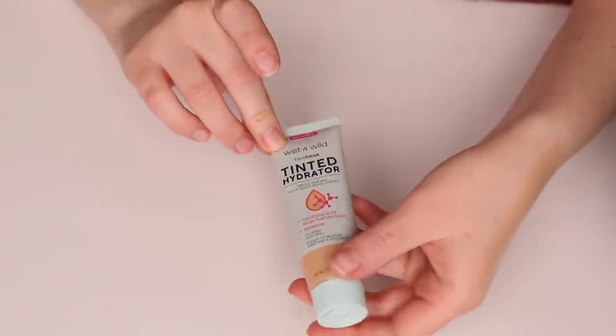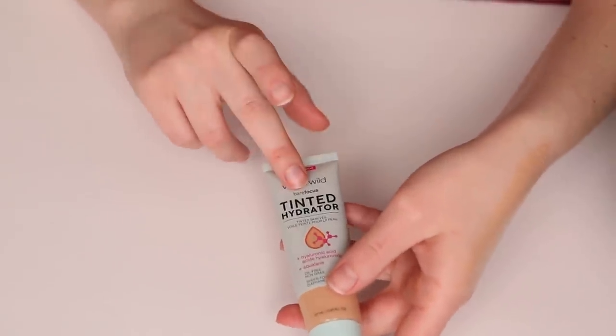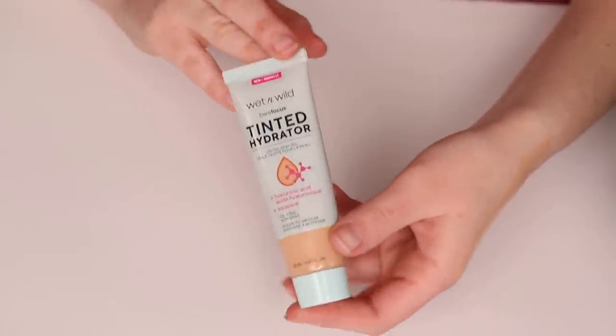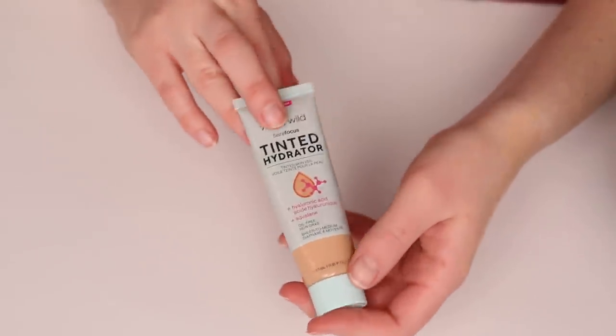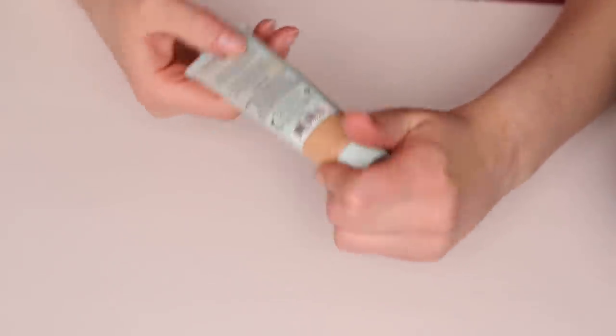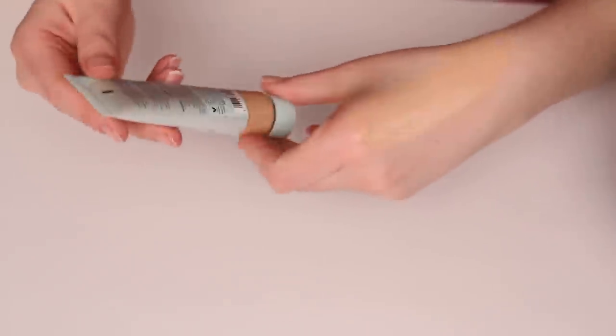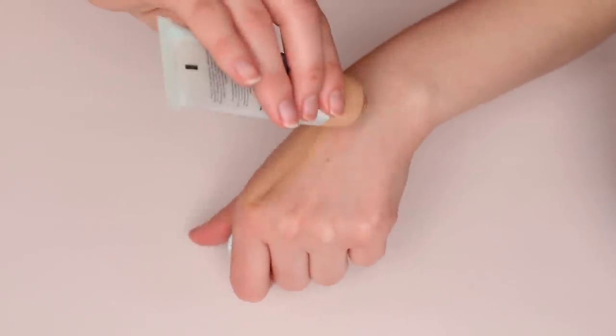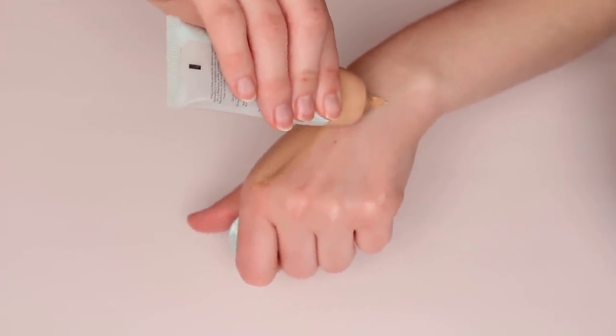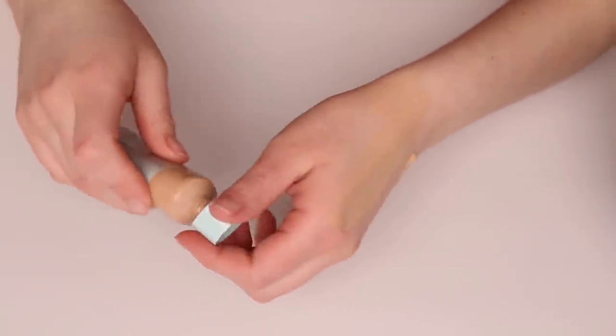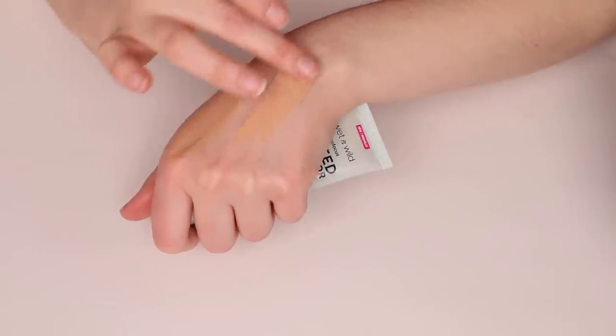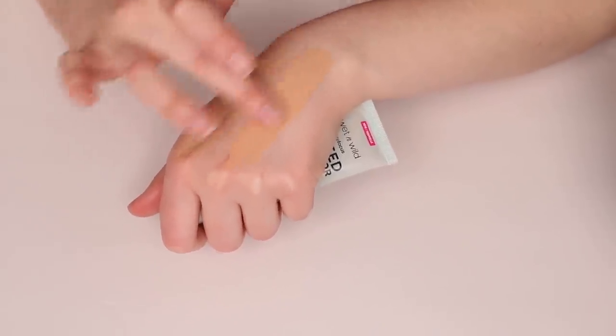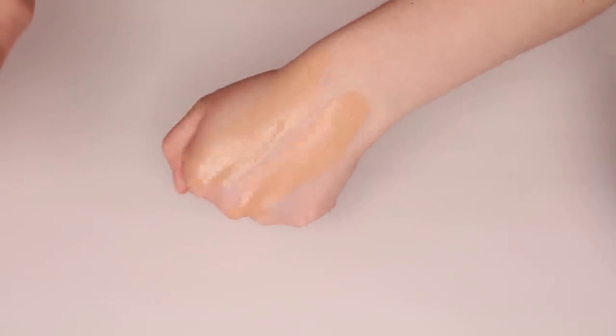I'm also bringing this one from Wet n' Wild, the Tinted Hydrator. I don't talk about this product for a couple of reasons. One, the shades are not great, the shade range is really bad. And secondly, the shade that I do have is too dark. This is the shade Light, but I have this and I really honestly love the formula. So I figured that this would be a good time to get some use out of it. There is a swatch of the shade Light. Again, it's a little bit darker than Larchmont and also a little bit more pink.